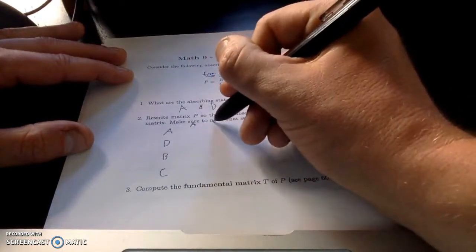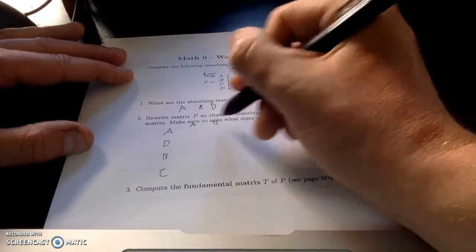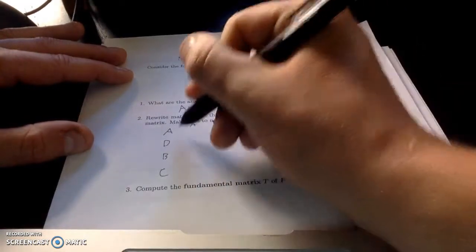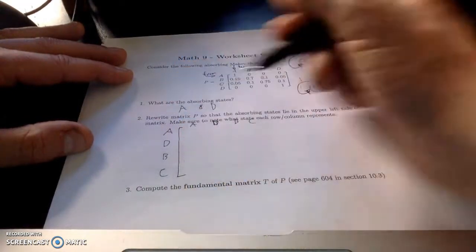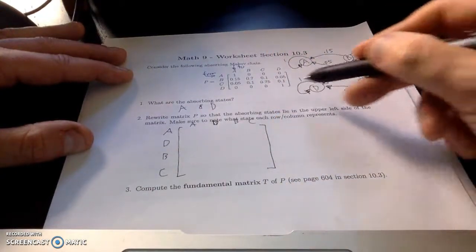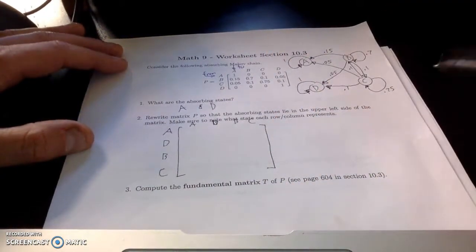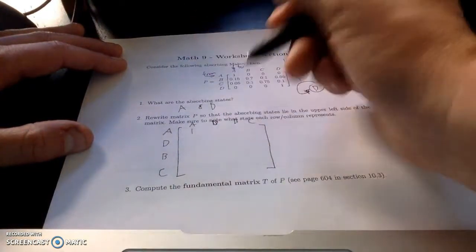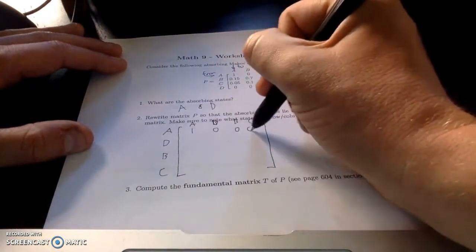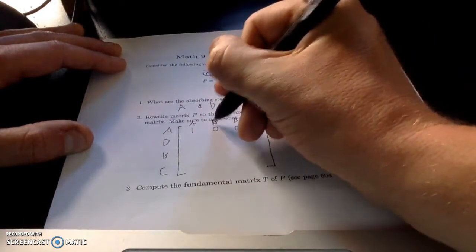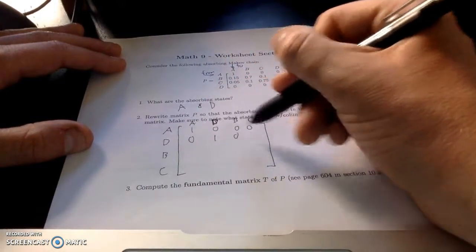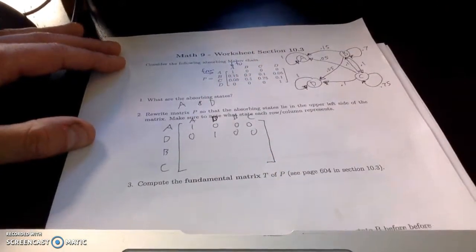And then A, D, B, C. And I'm going to fill in this matrix. I'm essentially just rearranging the matrix. But I want to make sure I'm careful here. A goes to A at 100%. It doesn't go anywhere else. And D goes to itself at 100%. It doesn't go anywhere else.